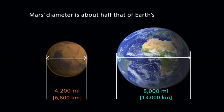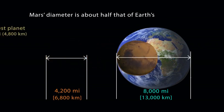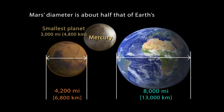The diameter of Mars is about half that of Earth. It is the second smallest planet in the solar system.